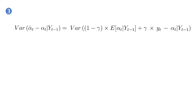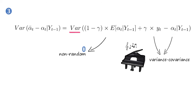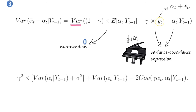Looking at the last equation, the variance of the first term is zero because as of FT-1, that term is non-random. The variance of the second and third term will obey the classical variance-covariance expression. For that, we write the measurement yt as the sum of alpha t and epsilon t. The variance expression simplifies to the following term.